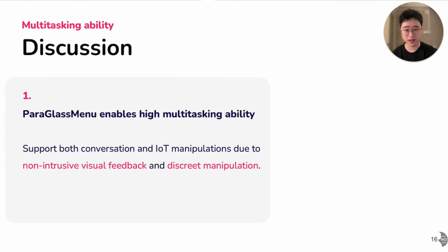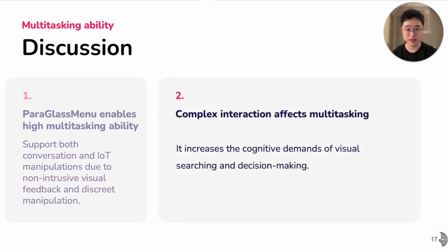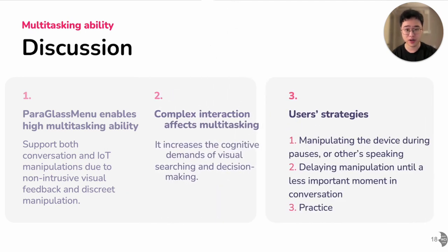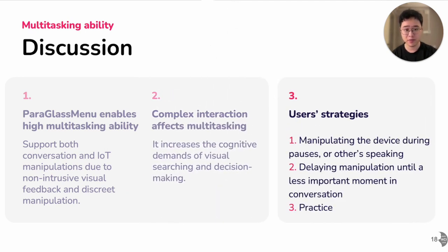We also have other interesting insights to discuss. First, regarding multitaskability — participants found that Paragraphs Menu supports high multitaskability through non-intrusive visual feedback and discrete manipulation. However, they also reported that some complex interactions, such as selecting a song to play, can affect multitaskability by increasing cognitive demands for visual searching and decision-making. Participants adopted several strategies to mitigate this burden: manipulating devices during pauses in conversation or when others are speaking, delaying manipulation until less important moments, and improving multitaskability with practice.